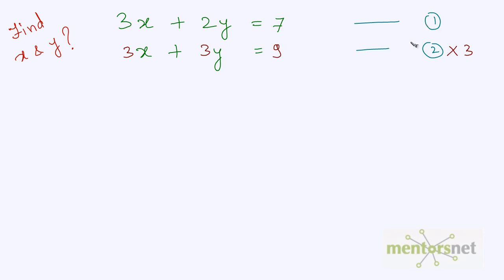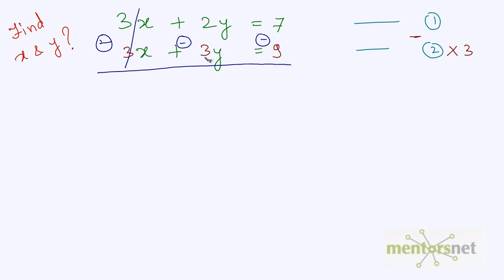Now we subtract equation 2 from equation 1 to cancel out x. 3x minus 3x cancels out. 2y minus 3y gives minus y, and 7 minus 9 gives minus 2. So minus y equals minus 2, which means y is equal to 2.